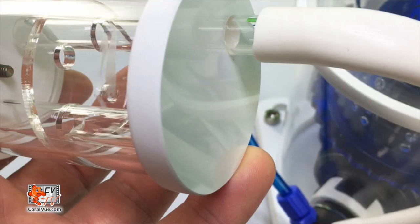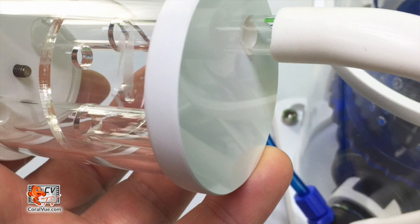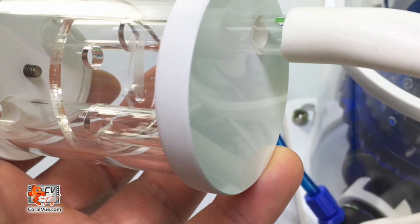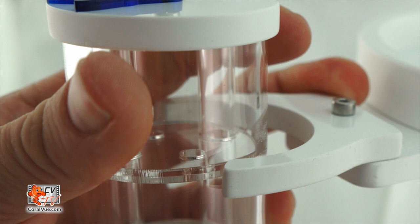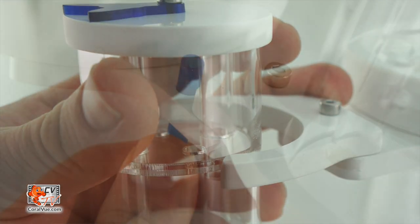Install the airline to the port located at the bottom of the silencer and with the blue air control face upward, press the silencer into the bracket.